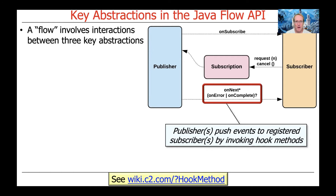Looking at the three methods defined here using regular expression notation: the onNext method could be called zero or more times, meaning those are the zero or more events that are published. But onError or onComplete can only be called once and may not be called at all. There may be circumstances under which errors never occur, or under which your stream never terminates because it's meant to go on forever. That little regular expression gives a synopsis of the semantics of those methods.